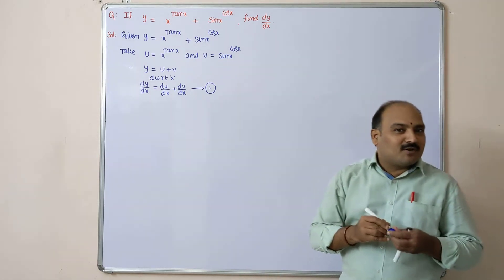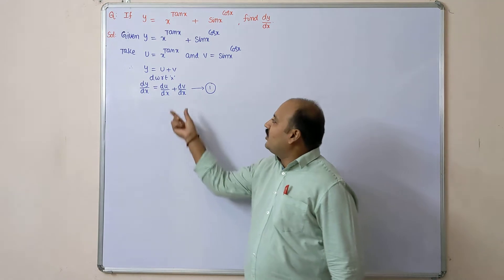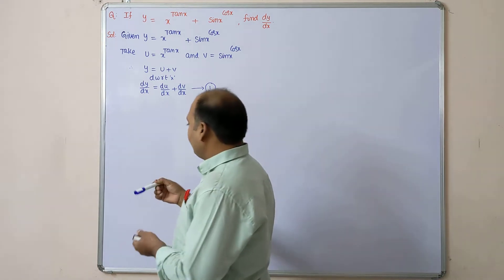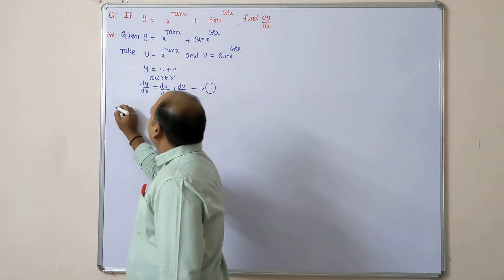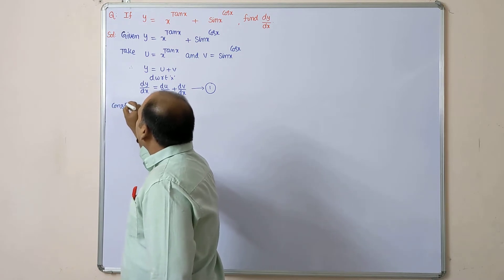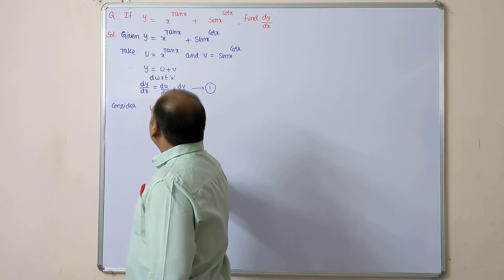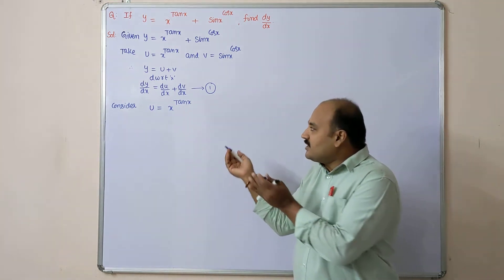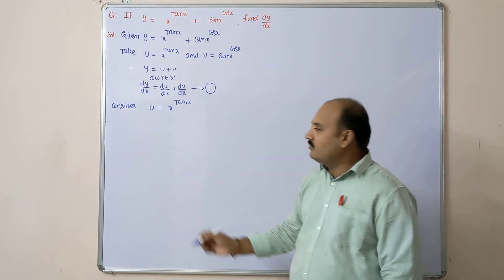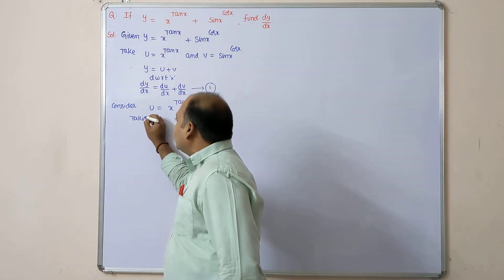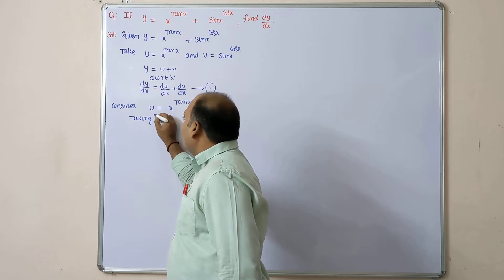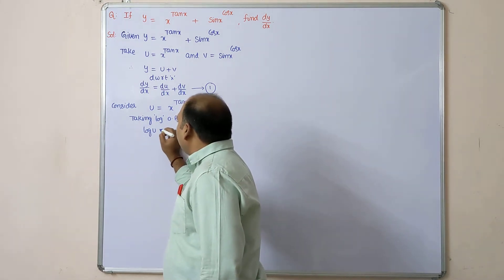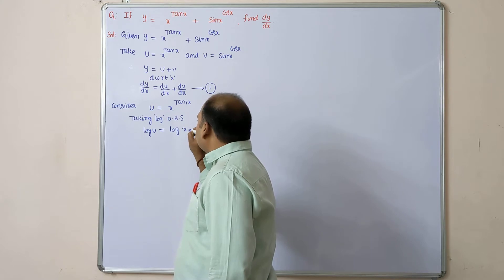To calculate dy/dx from equation one, we need to calculate du/dx as well as dv/dx. Consider u = x^(tan x). To differentiate these types of problems, take log on both sides. Taking log on both sides gives log u = log(x^(tan x)).